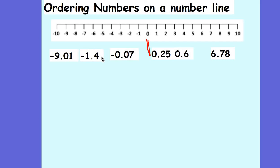So in order from smallest to biggest we've got: negative 9.01, negative 1.4, negative 0.07, then 0.25, then 0.6, then 6.78.